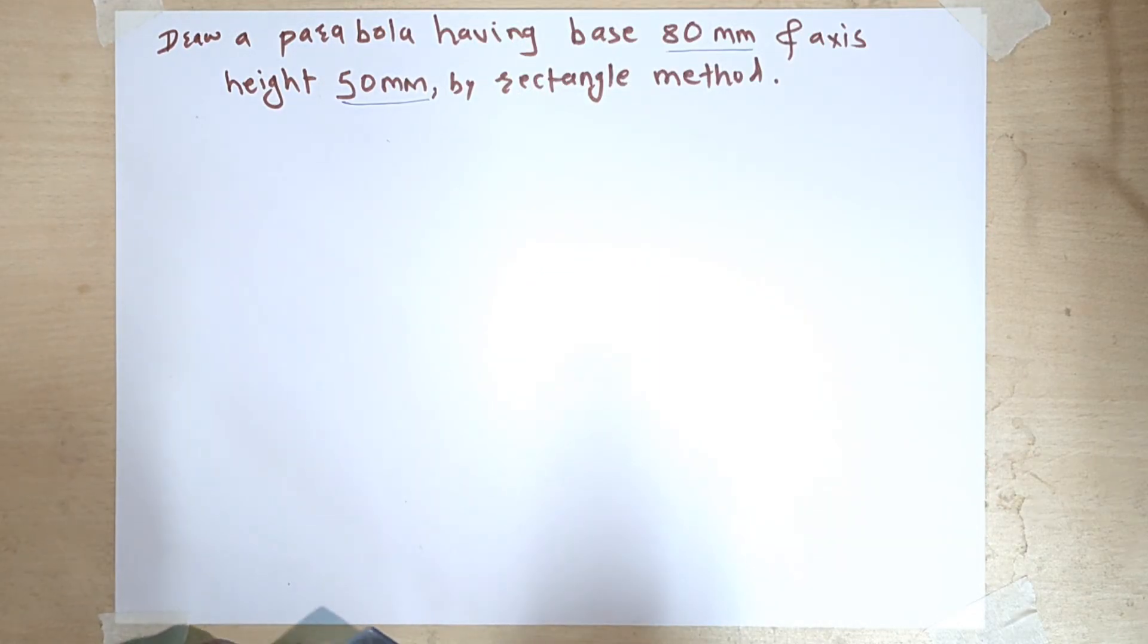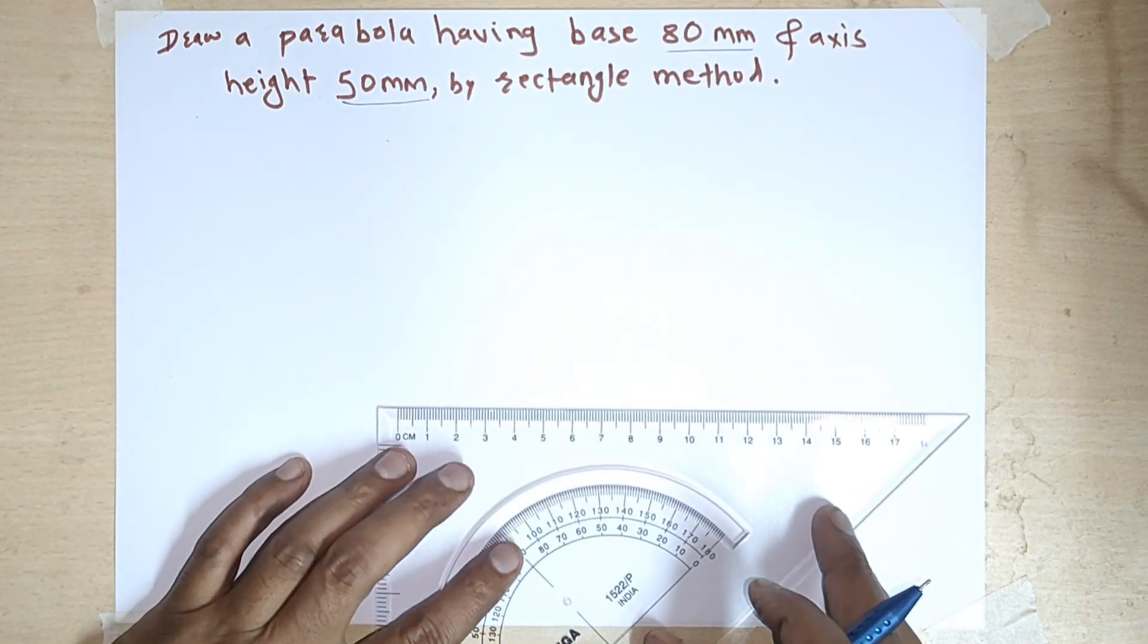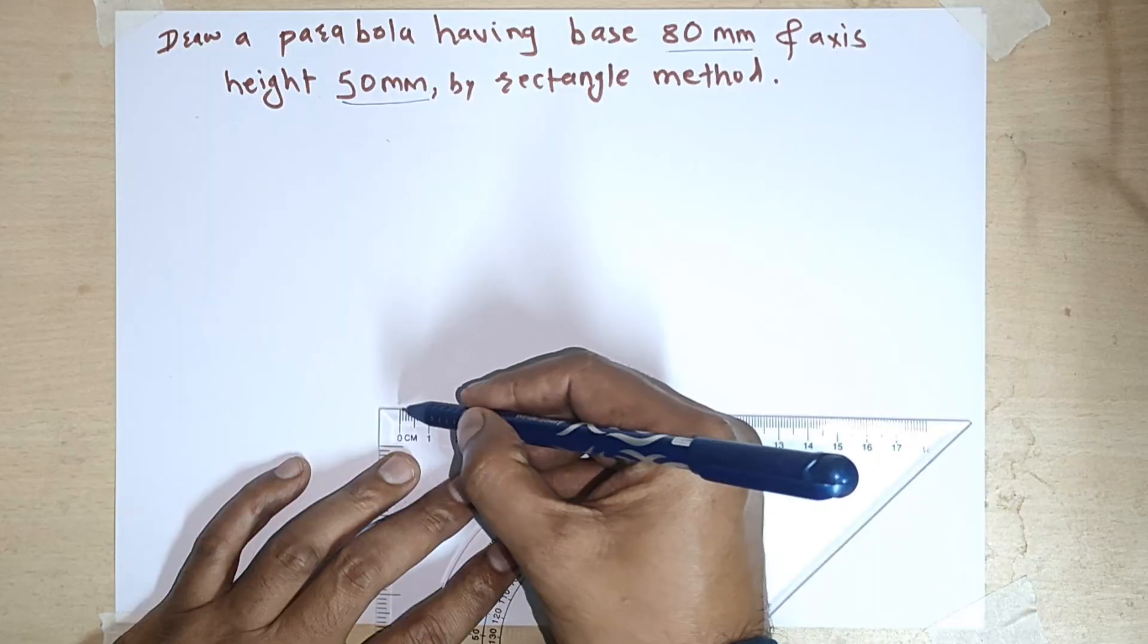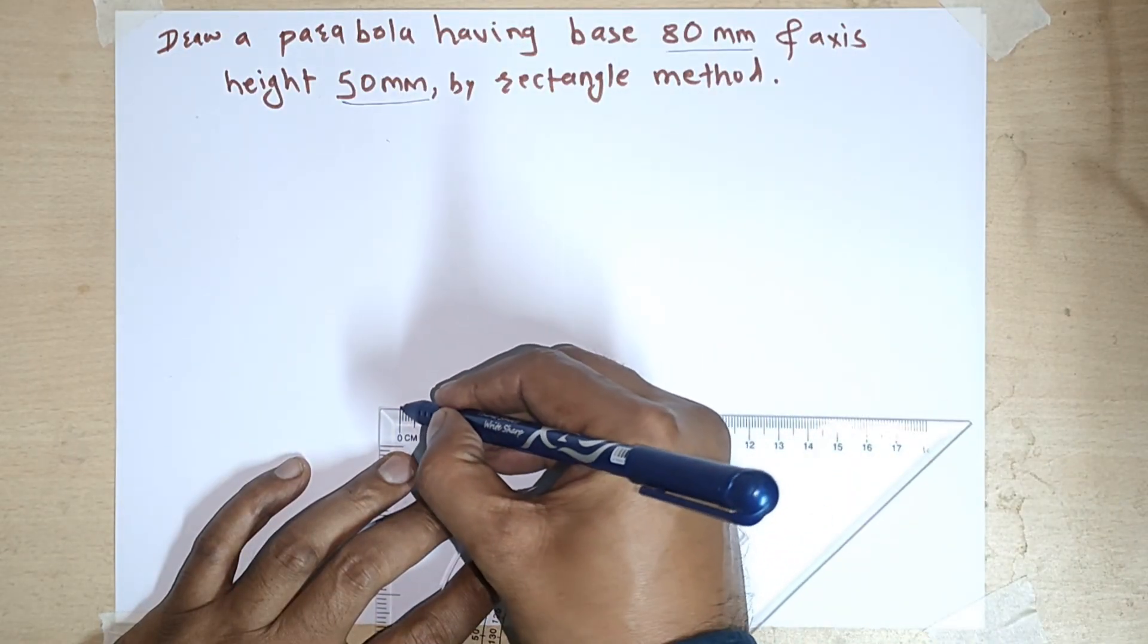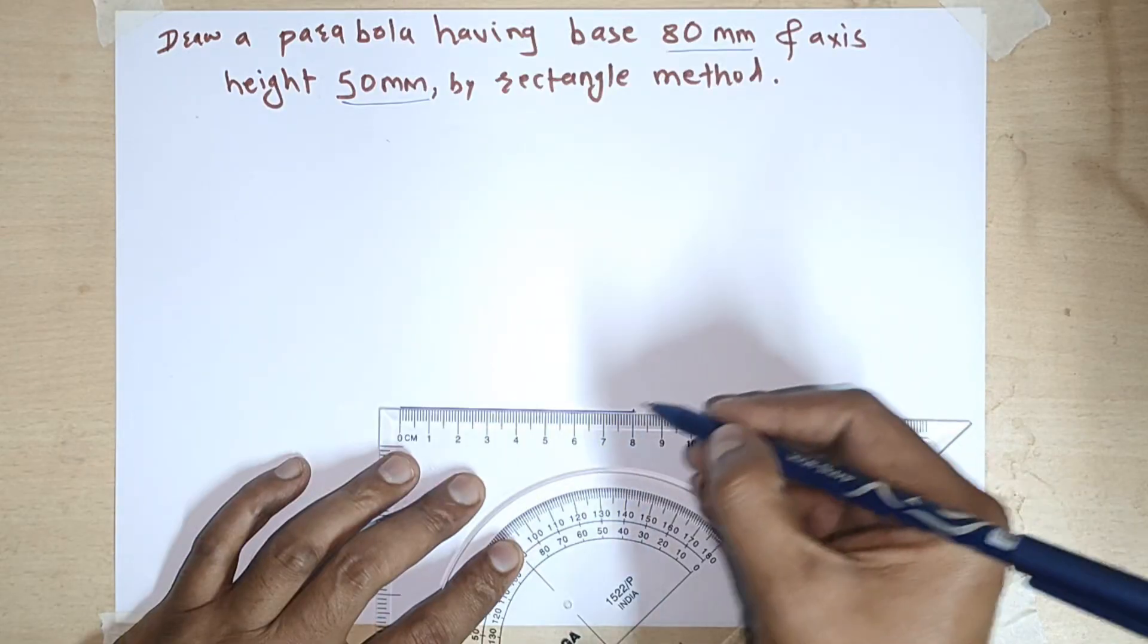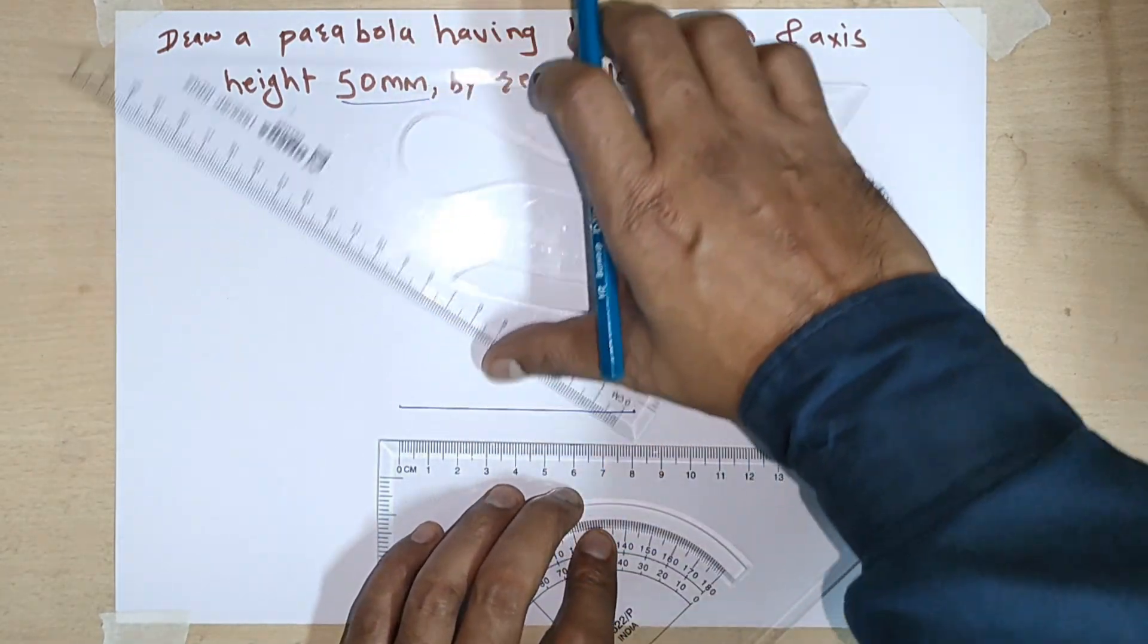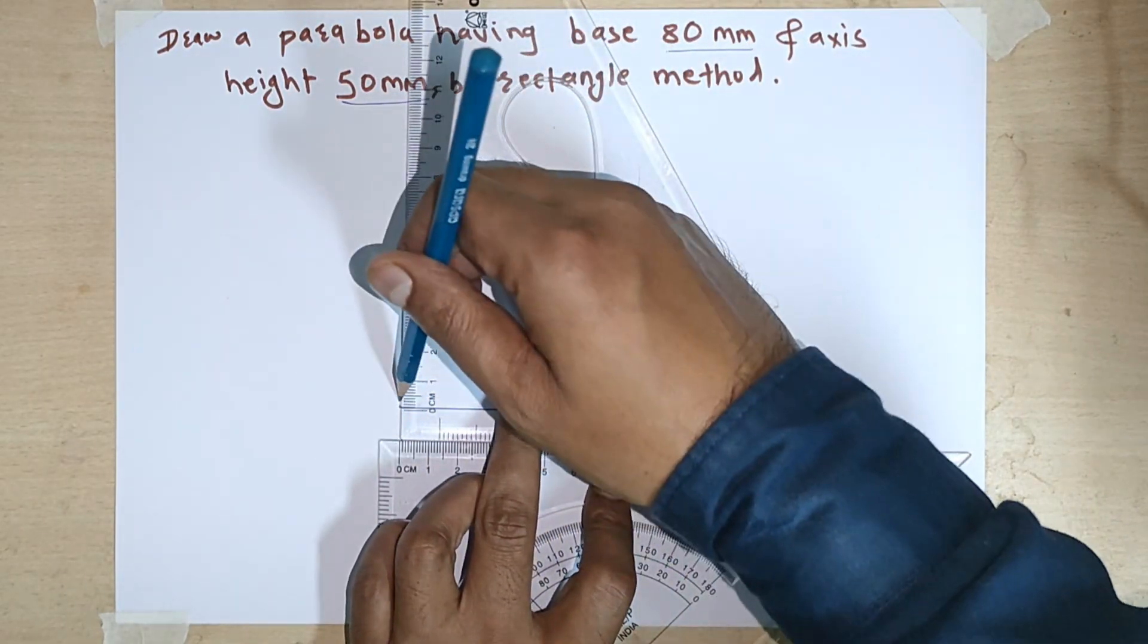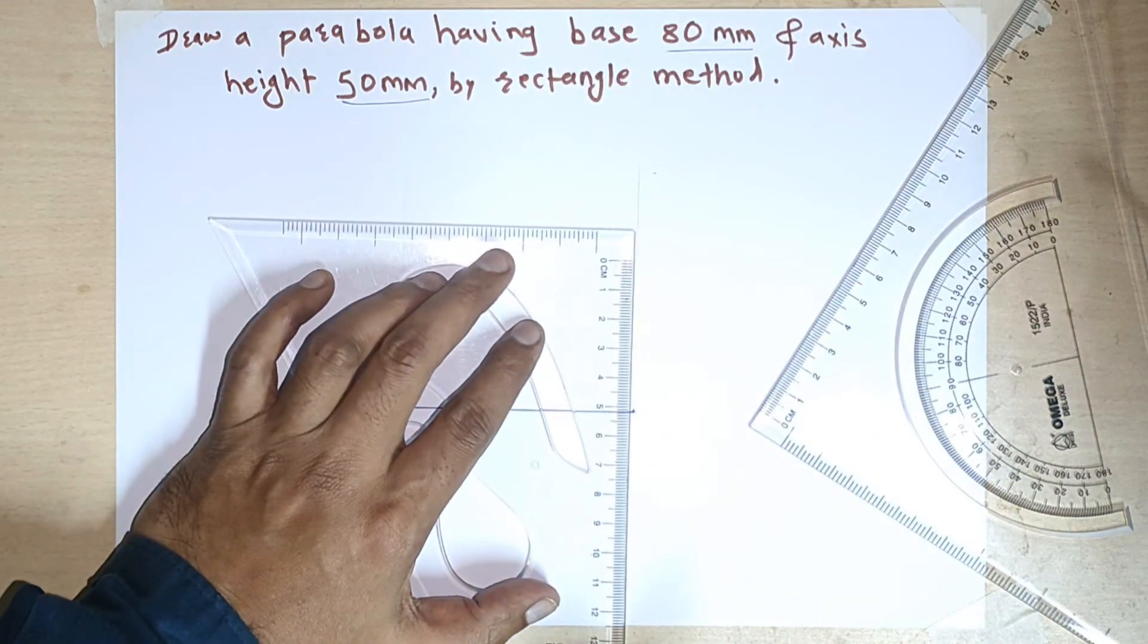Draw a parabola having base 80 mm and axis height 50 mm by rectangle method. So draw a base of 80 mm. Now take height as 50 mm.